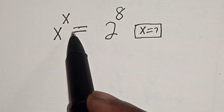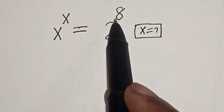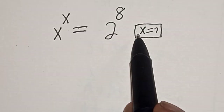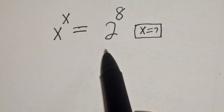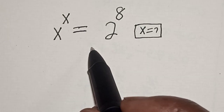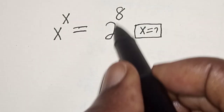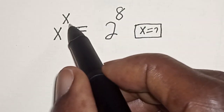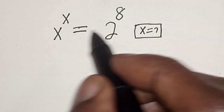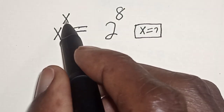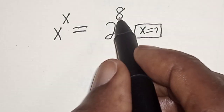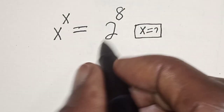s raised to power s is equal to 2 raised to power 8. What is the value of s? Hi everyone, welcome to my class. In this class, we want to find the value of s from this equation: s raised to power s is equal to 2 raised to power 8.